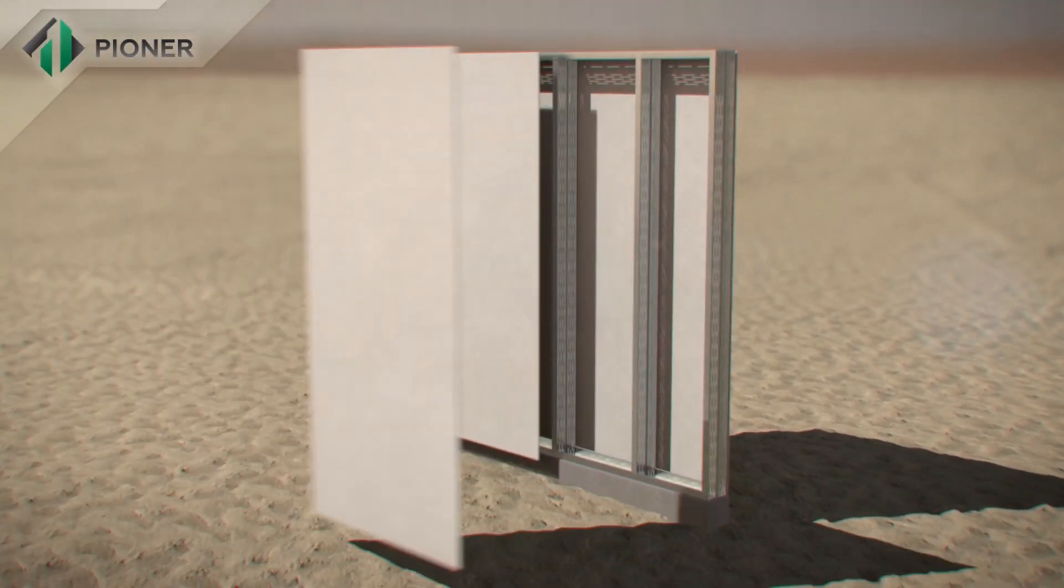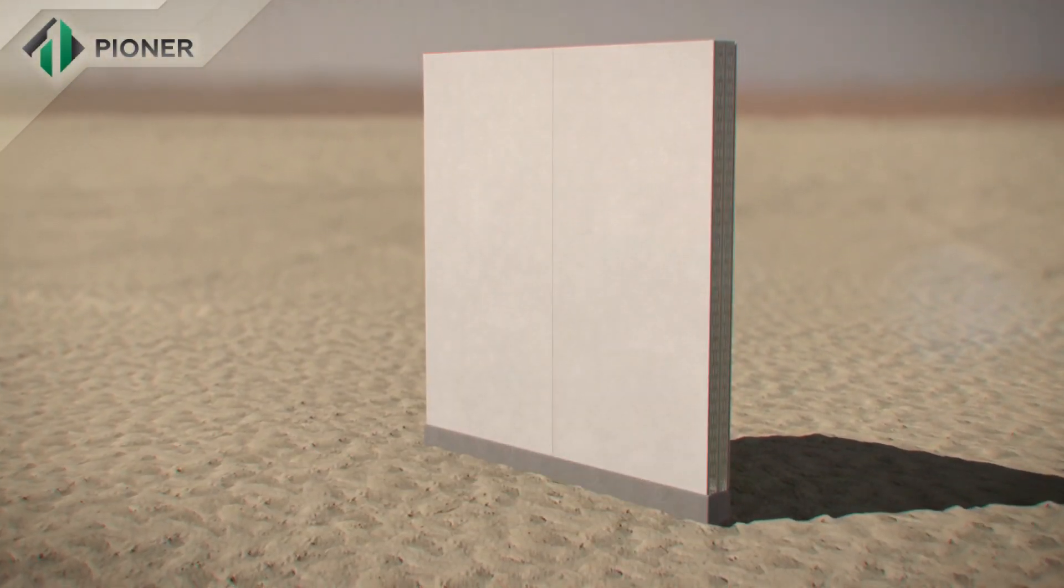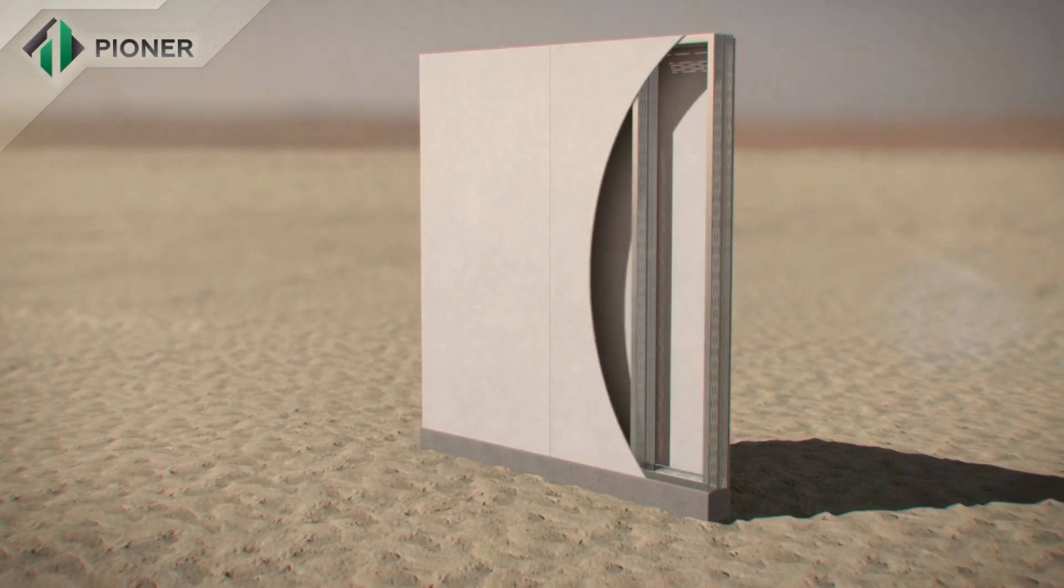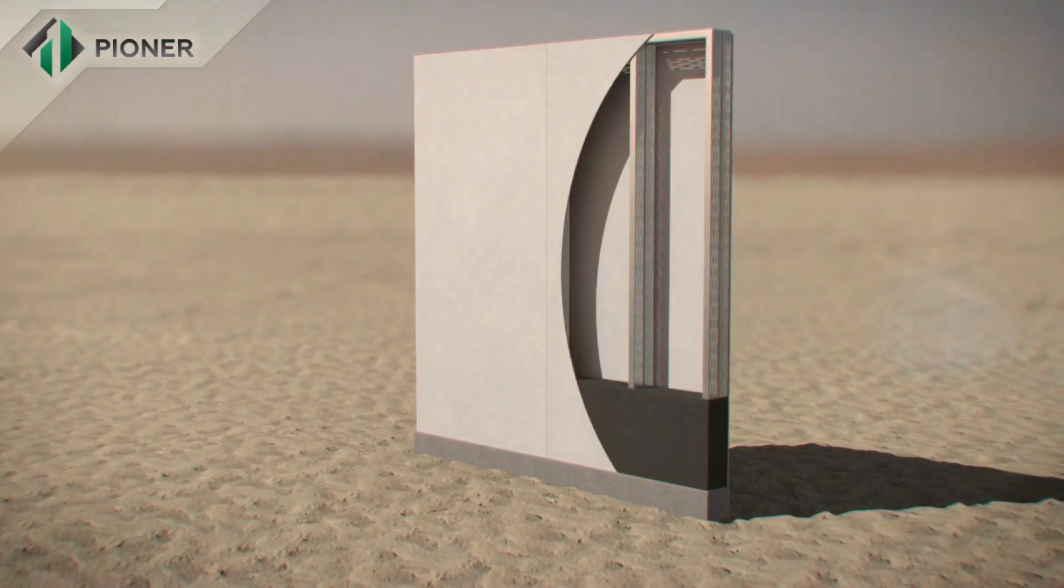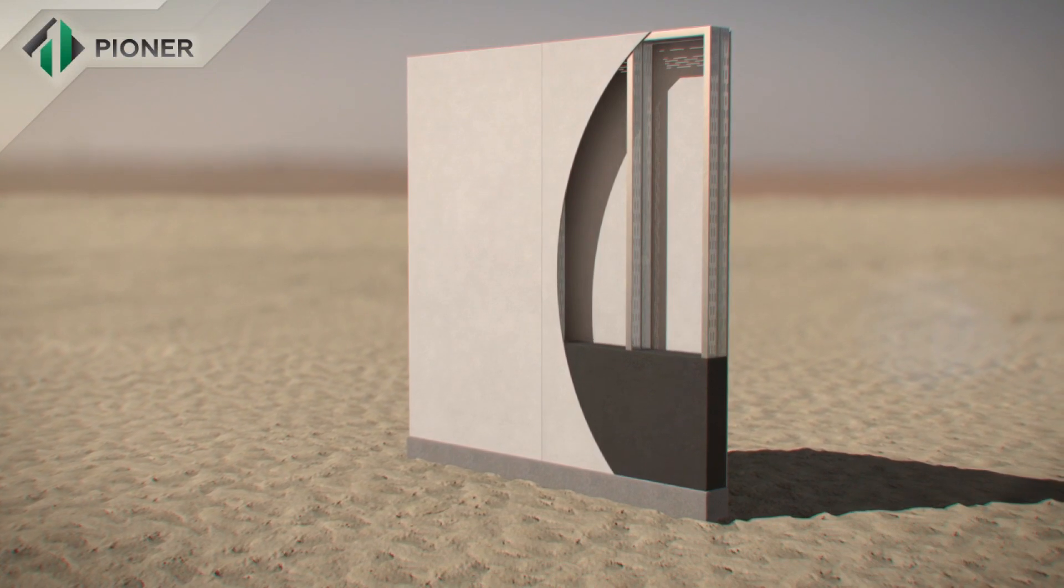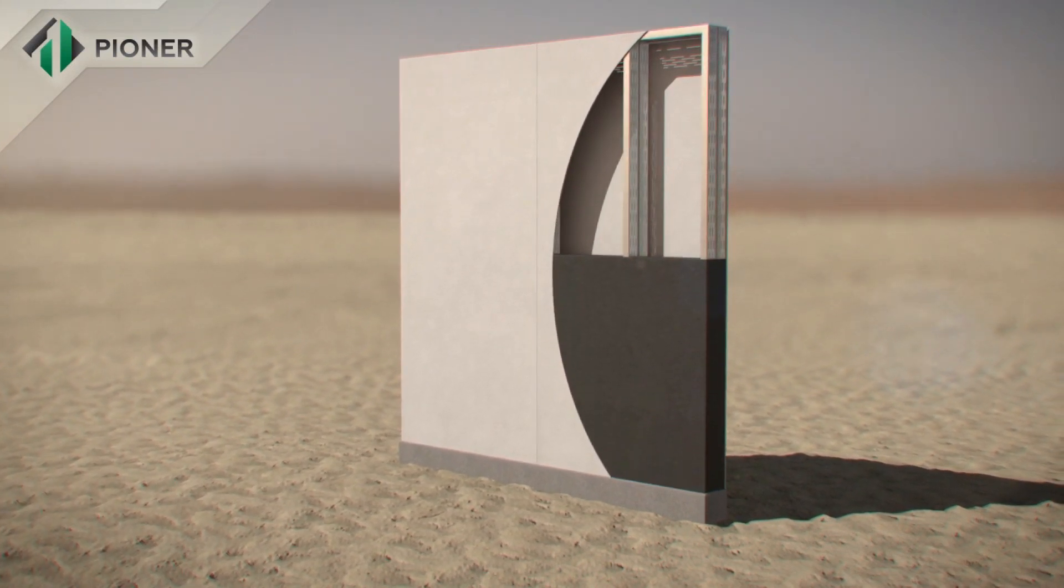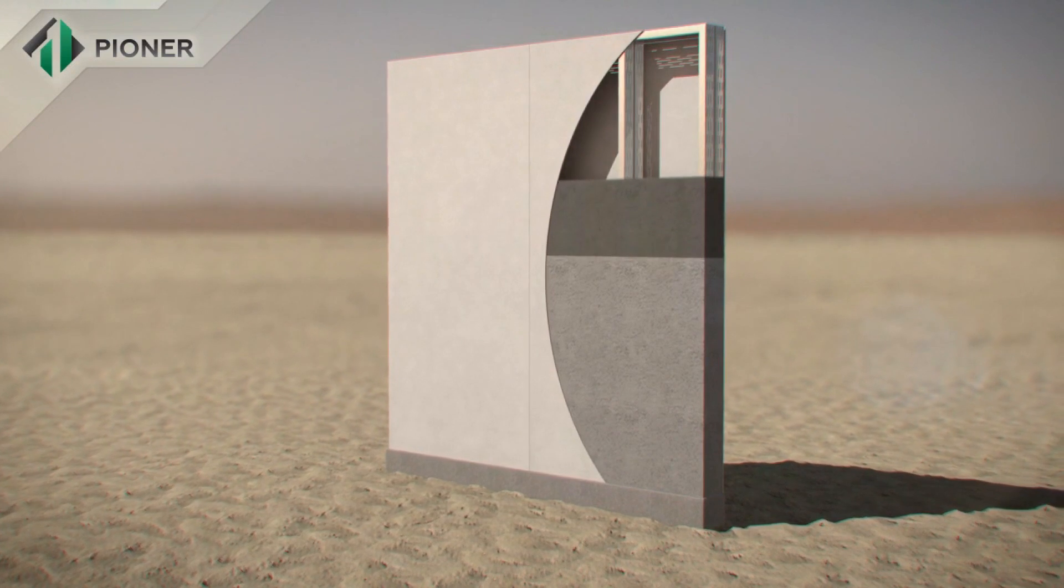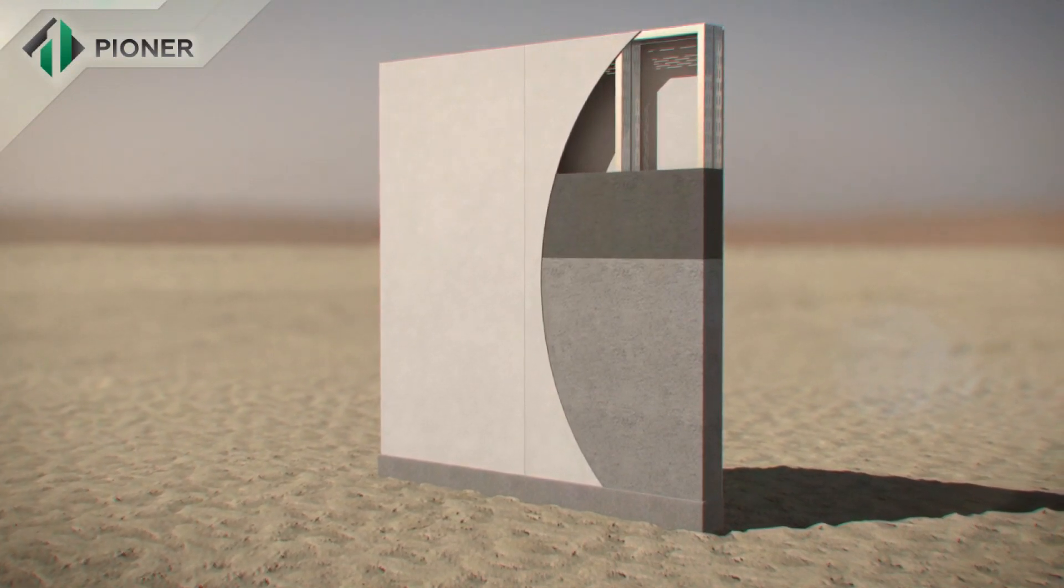A metal frame composed of bent galvanized profile, which is mounted on a prepared foundation, is the basis of Pioneer construction technology. Heavy combined fiber cement panel serves as permanent cast framework inside and outside of the wall.